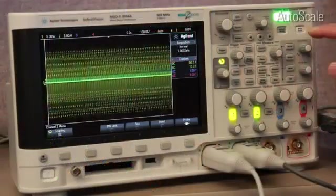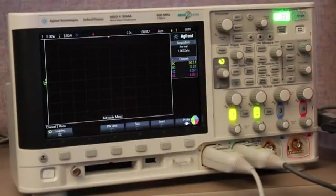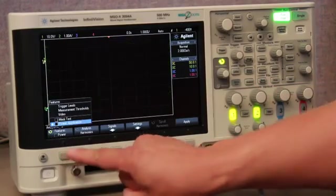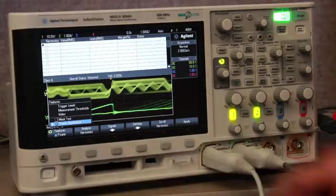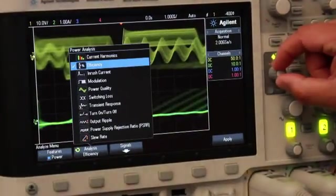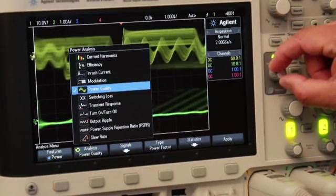Let's begin by pressing Auto Scale, then select the Analyze Front Panel key, and then select the Power option. The Power Measurement option comes with 11 different useful measurement functions you would use often as you design or debug your switching power supplies.